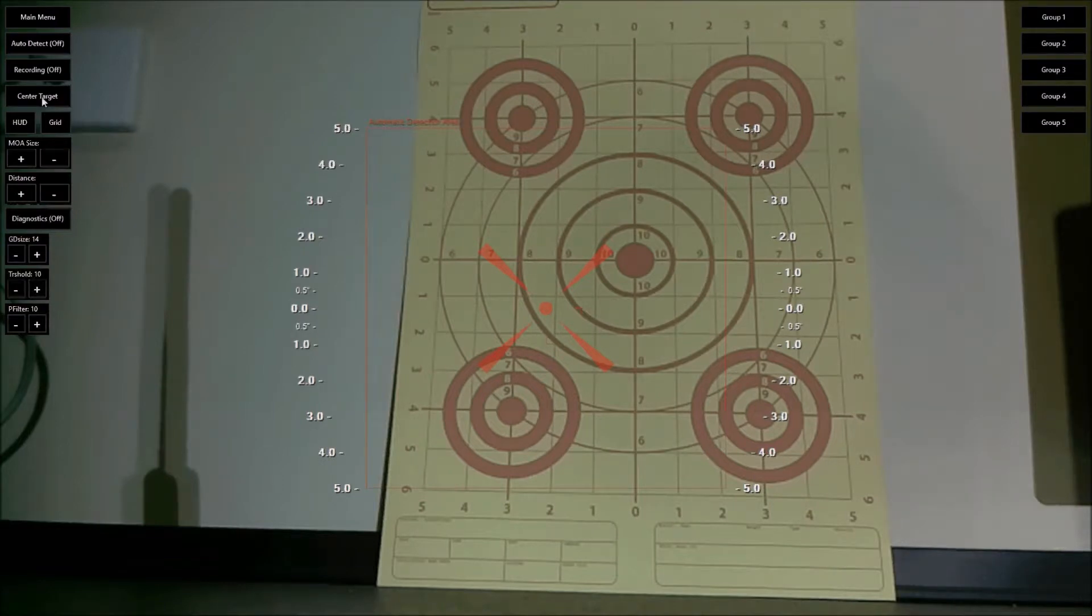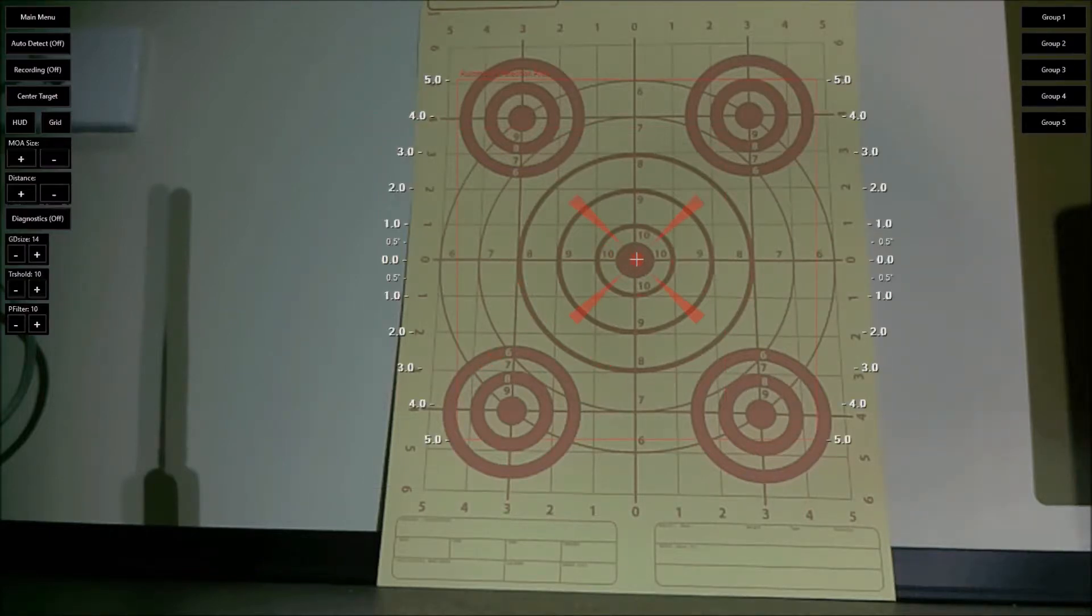The first thing that you'll need to do is to adjust the center of the target depending on how you've positioned the camera. So we'll just do that now. We click on the center target and we'll just click in the middle of our target here and that'll shift everything over.